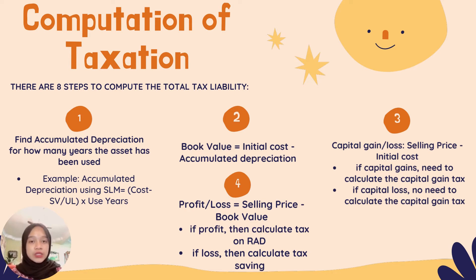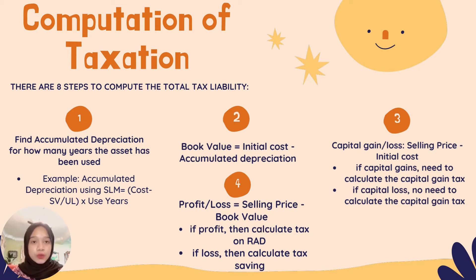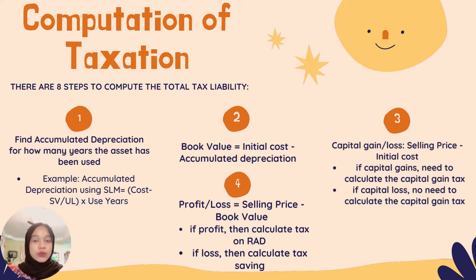Step two: book value equals initial cost minus accumulated depreciation. Step three: capital gain or loss equals selling price minus initial cost. Note: if you get capital gains, you need to calculate the capital gains tax. But if you get a loss, there is no need to calculate the capital gains tax. Step four: calculate profit or loss equals selling price minus book value. If you get profit, then calculate tax on recaptured accumulated depreciation.